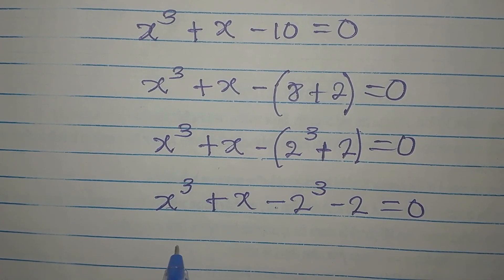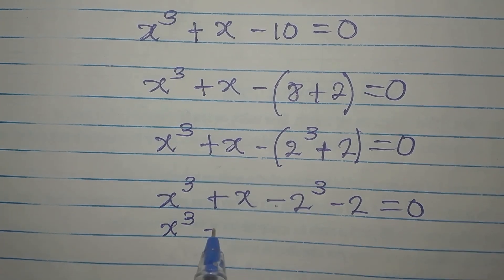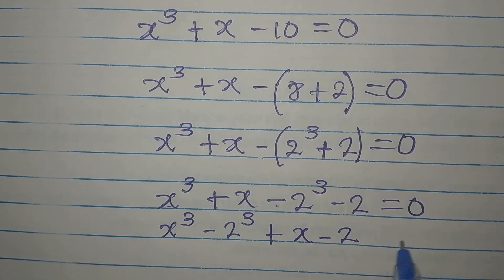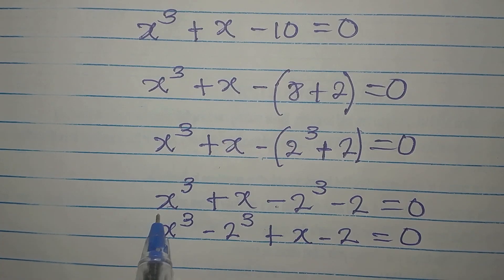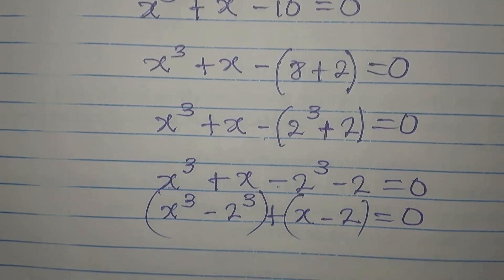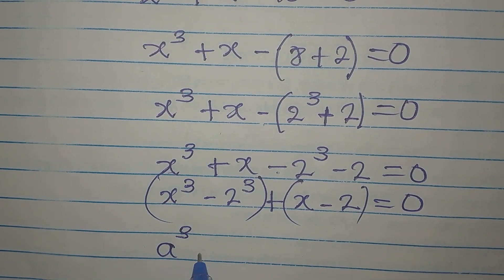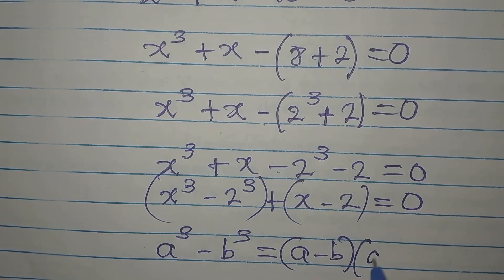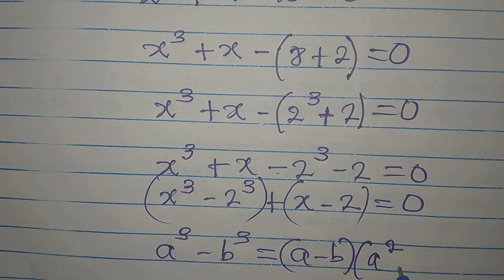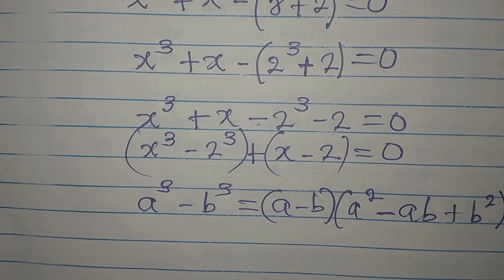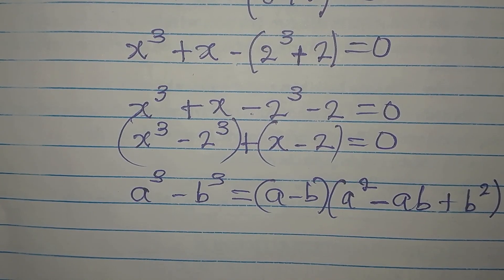Now let's regroup: we bring X³ - 2³ together, giving us (X³ - 2³) + (X - 2) = 0. For the first group, we recognize the difference of two cubes. Recall that a³ - b³ = (a - b)(a² - ab + b²).